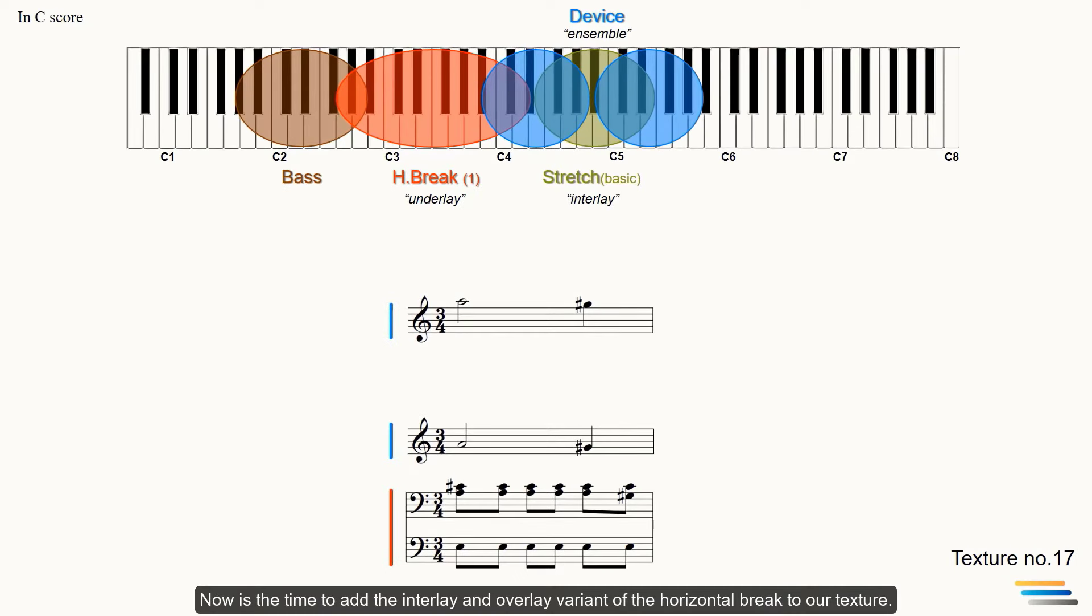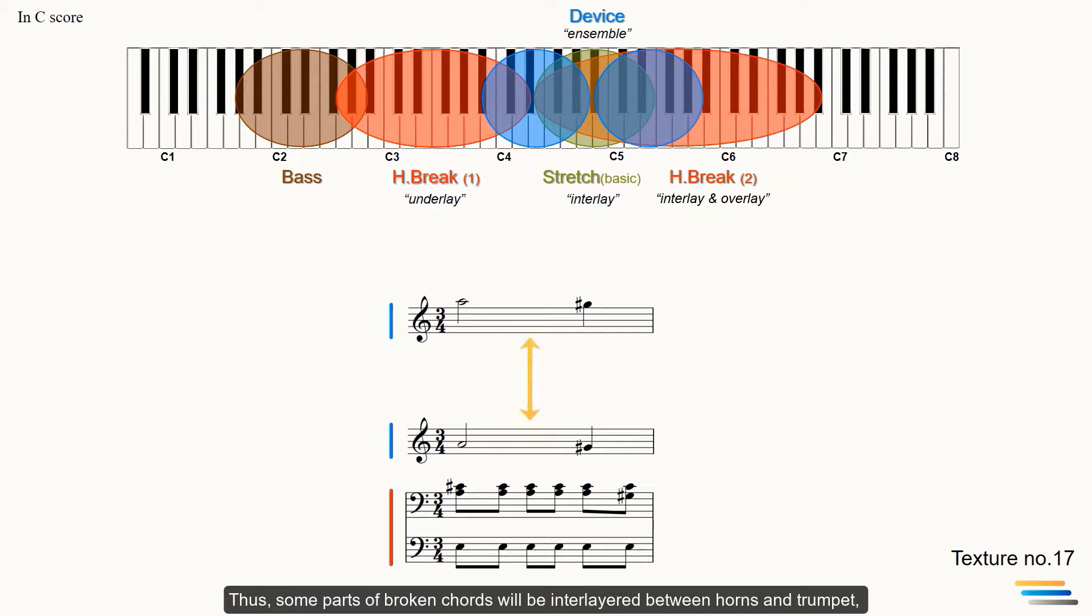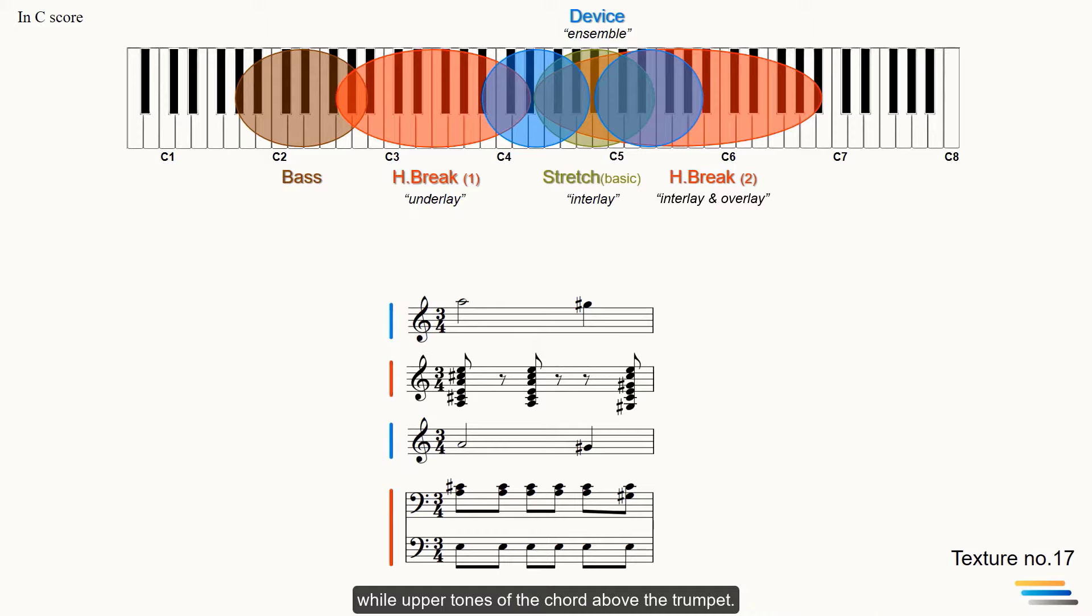Now is the time to add the interlay and overlay variant of the horizontal break to our texture. Thus, some parts of broken chords will be interlayed between horns and trumpet, while upper tones of the chord above the trumpet. This is the chord voicing technique of the woodwind section. You already know about it.